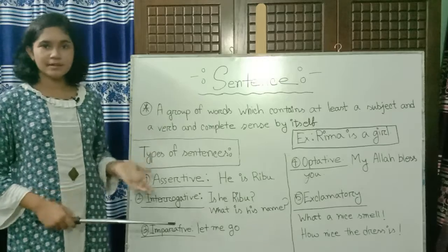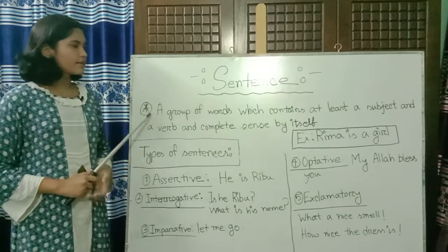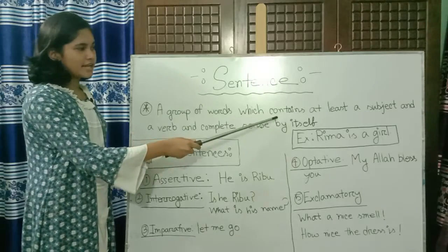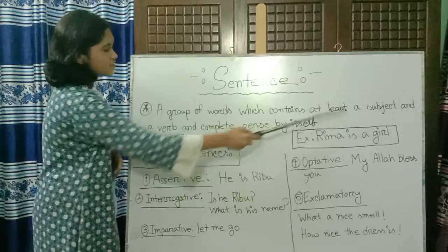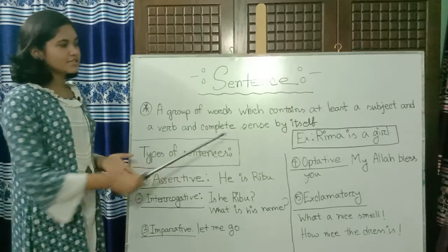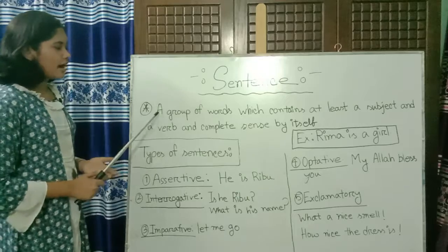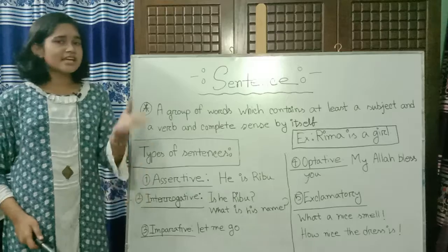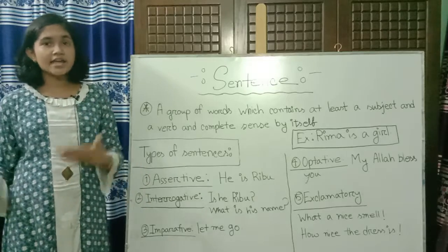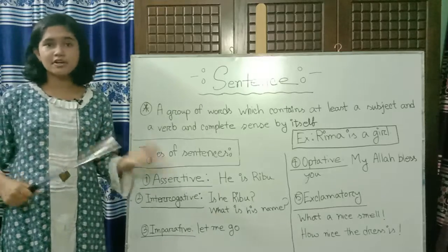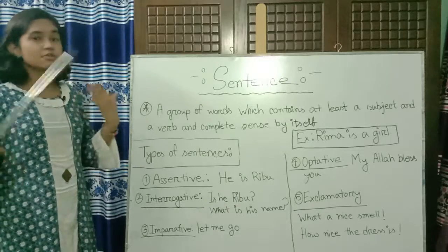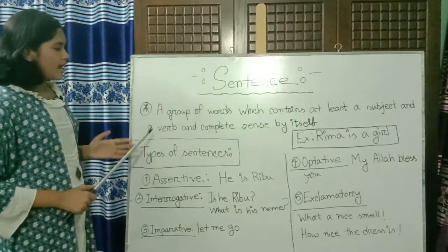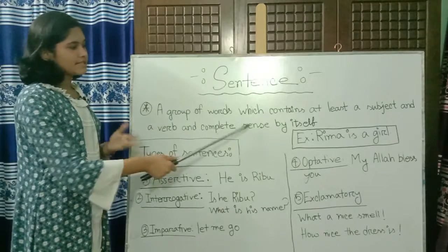We can see here on the board — let's learn about sentence. A sentence is a group of words which contains at least a subject and a verb, and completes sense by itself. A subject means he, she, it, they, I, we, or names like Rahim, Karim — persons that we have learned are subjects.